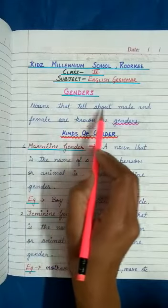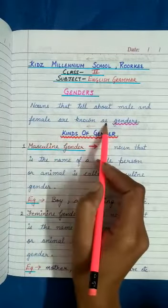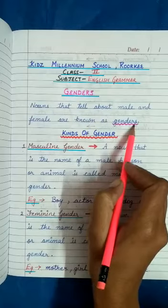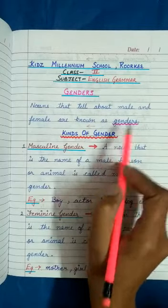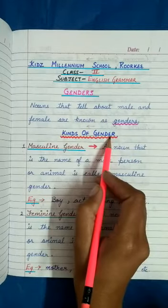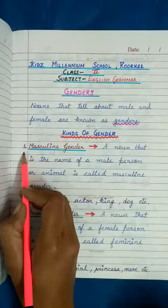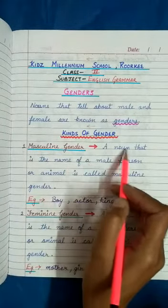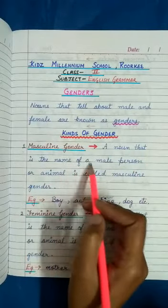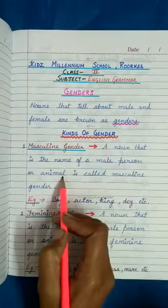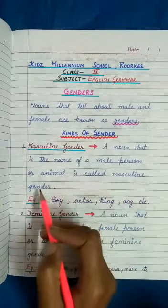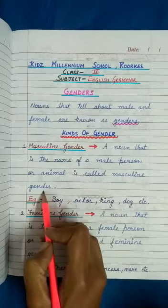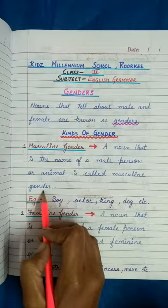Nouns that tell about male and female are known as genders. Now we are going to read about kinds of genders. First, masculine gender. A noun that is the name of a male person or animal is called masculine gender.